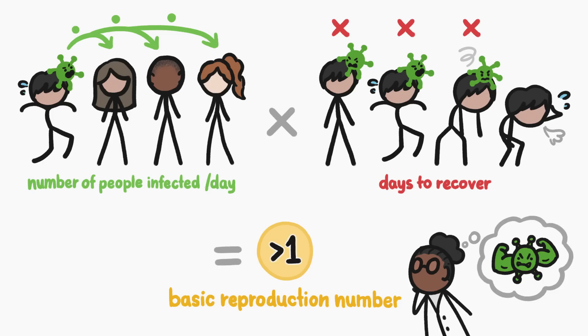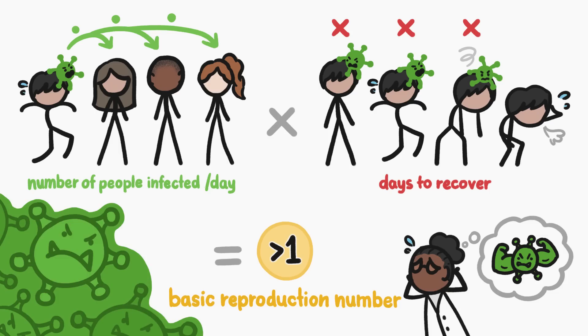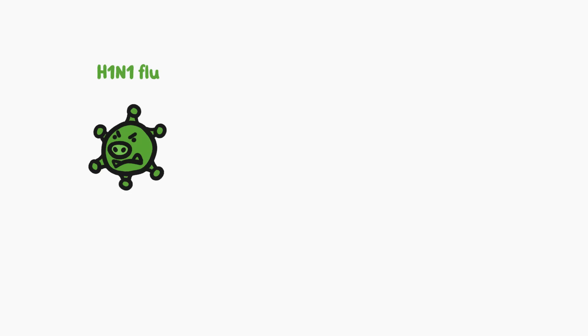If the basic reproduction number is greater than one, then the number of people getting sick is higher than the number of people recovering, and the infection has serious outbreak potential. By plugging in the numbers for that 2009 outbreak of pandemic flu in Mexico, we get a basic reproduction number between 1.5 and 3, depending on the source of data.